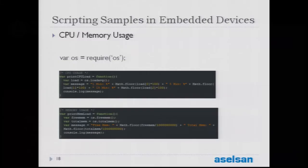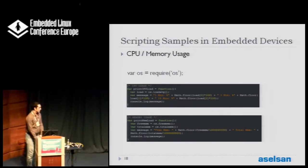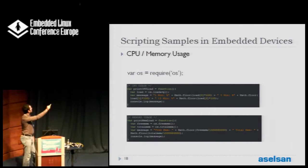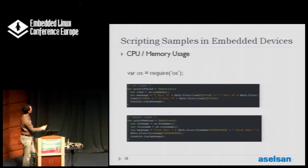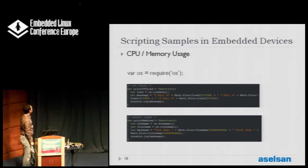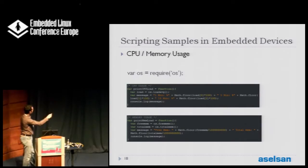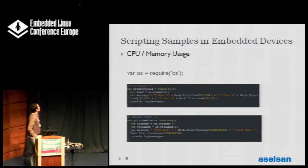The second example is a CPU and memory usage application. Here we use the OS module from Node's internal modules. We have three functions: loadaverage, freememory, and totalmemory. The loadaverage function returns an array of three values — one minute, five minute, and fifteen minute averages of CPU load — and we print it to the console. We also get the free memory and total memory amounts of the system. So you can build a memory and CPU tracing application using these simple functions.